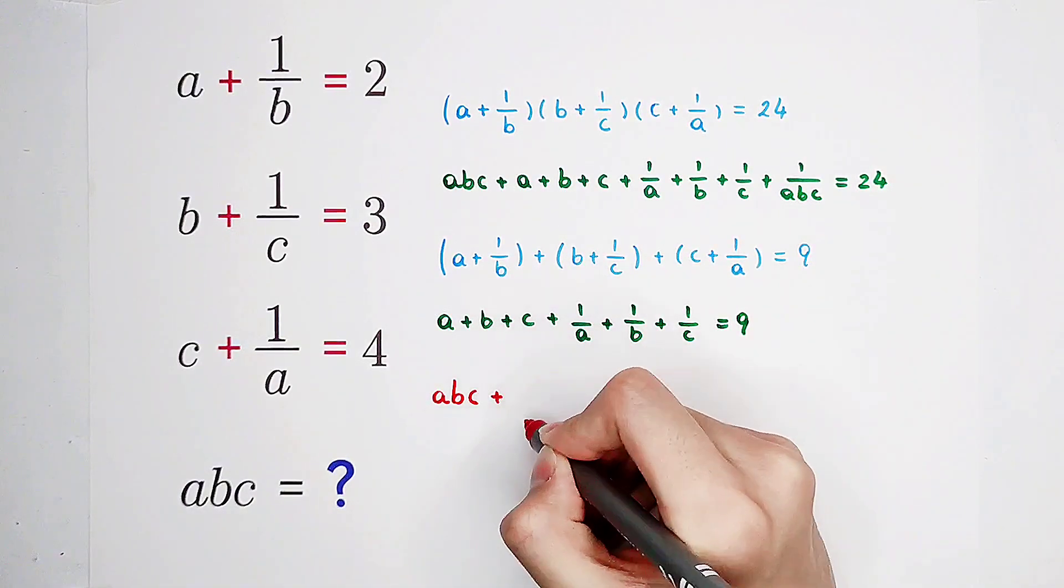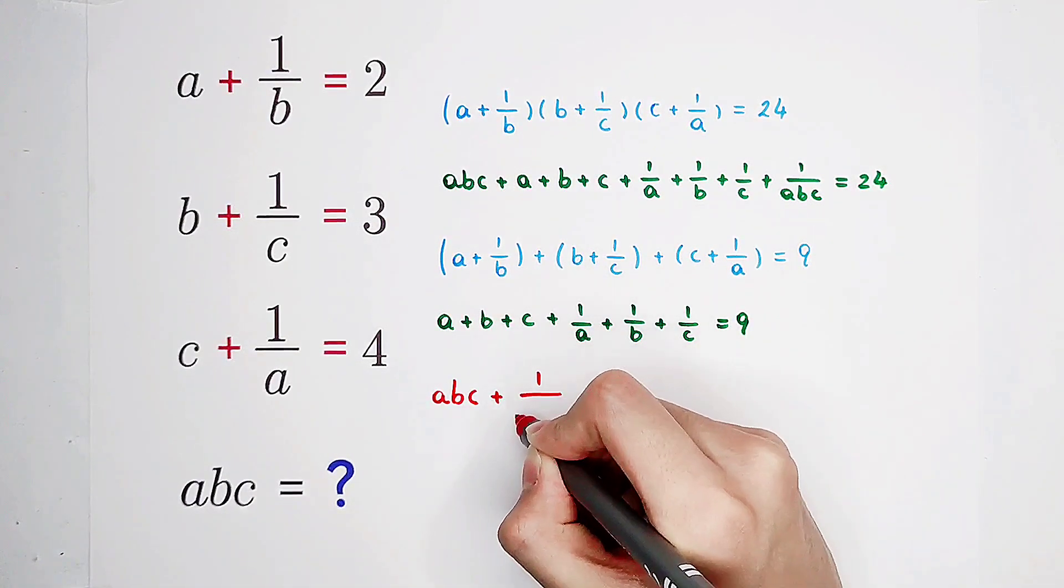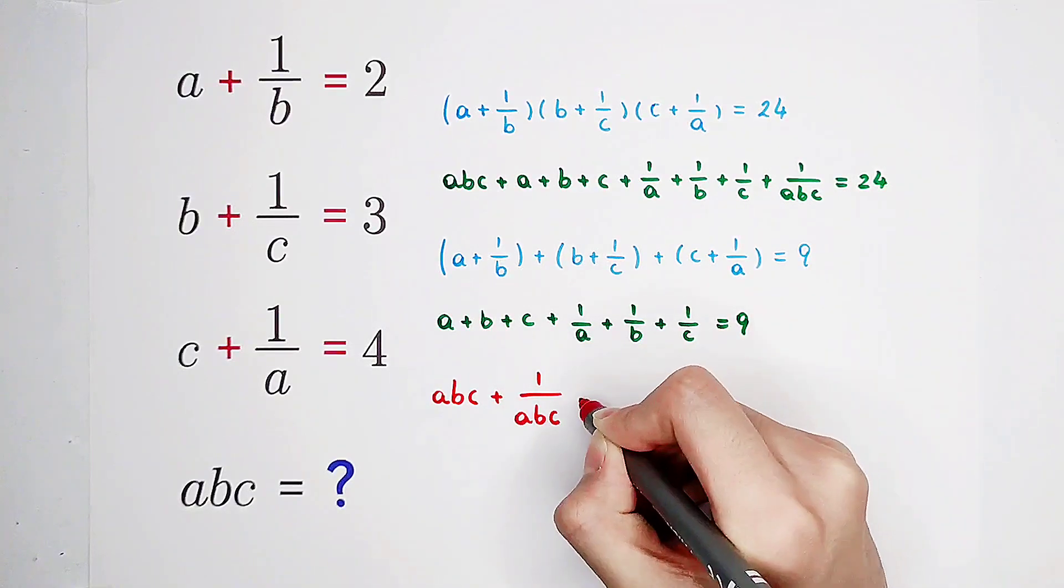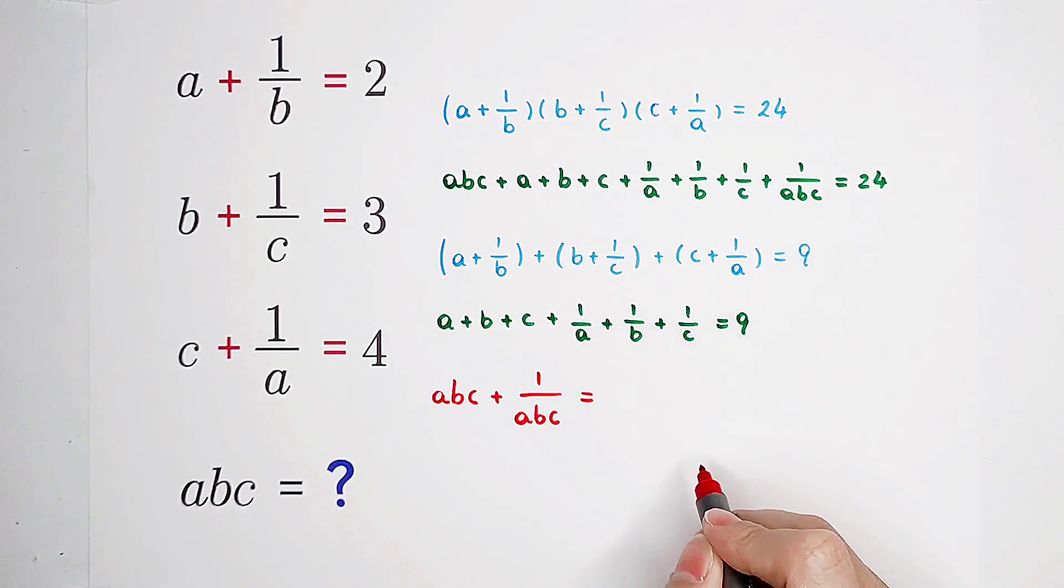a, b, c plus one over a, b, c plus one over a, b, c is just 24 minus nine.